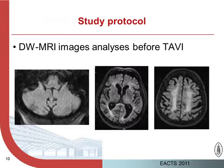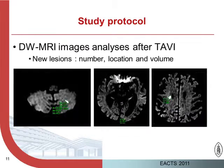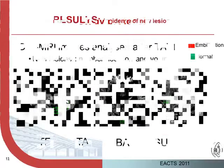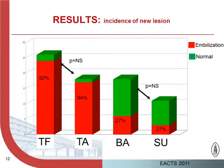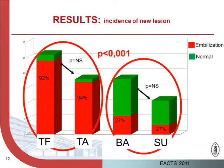This is the pre-op MRI performed in a patient. We compare those studies with the post-op MRI, and we try to identify the number of new ischemic lesions, the location of the lesions, and we calculate the volume of the lesions. What we found is a very high rate of embolization again: 92% for transfemoral, 94% for transapical, and a very low rate of embolization for balloon valvuloplasty alone without valve implantation and surgery. There is no difference between TF and TA, and no difference between balloon and surgery, but there is a clear difference between TAVI and non-TAVI groups.